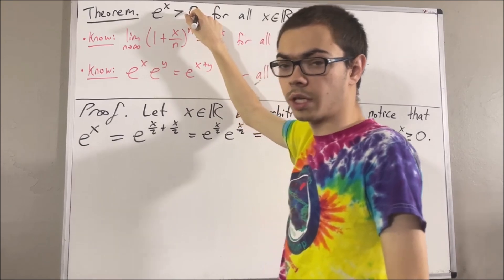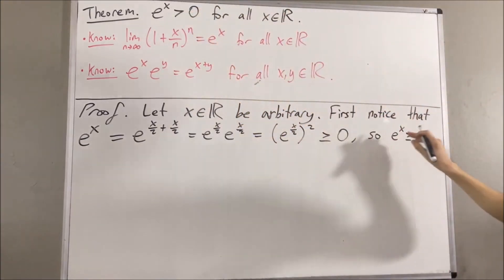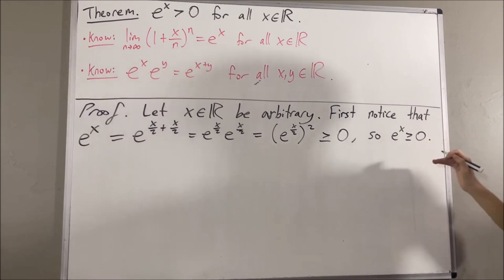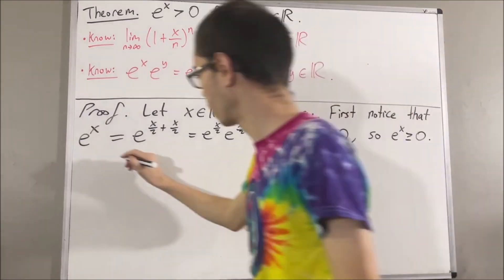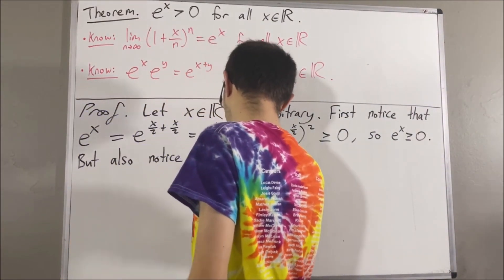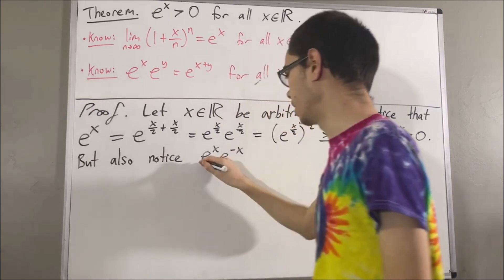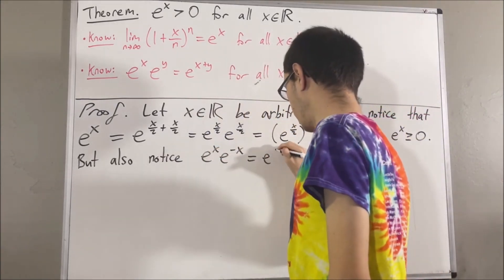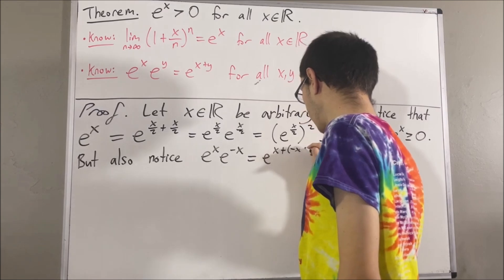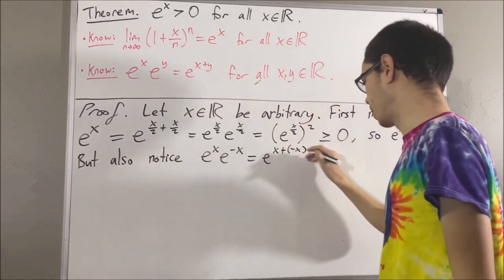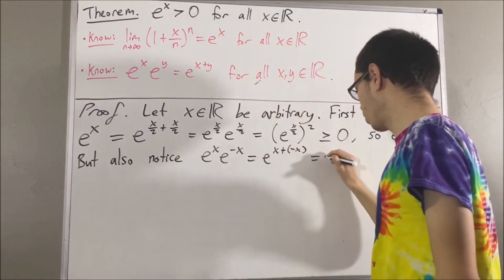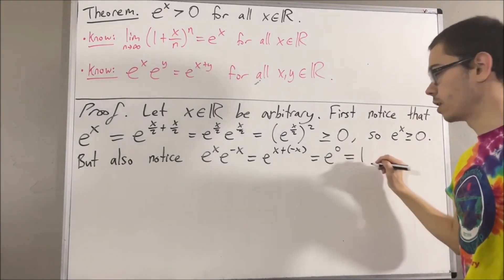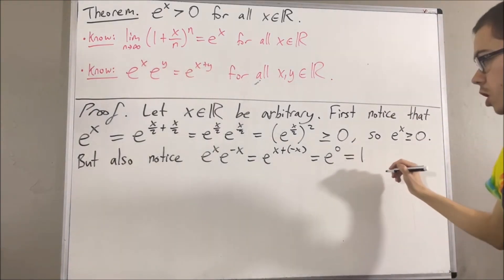So how do we do that? We have to show that e to the x is not equal to zero. The next thing to notice is the following: if we compute e to the x times e to the negative x, we know that this equals e to the x plus negative x, and x plus negative x is zero. So we have e to the zero, and we know that e to the zero is equal to 1.